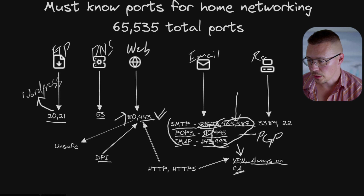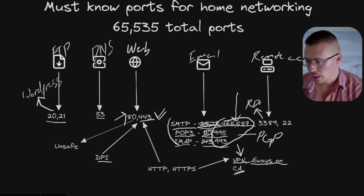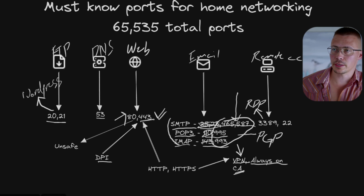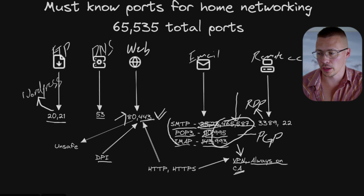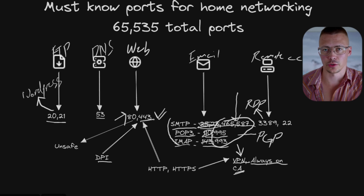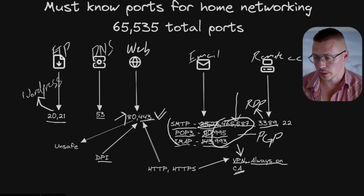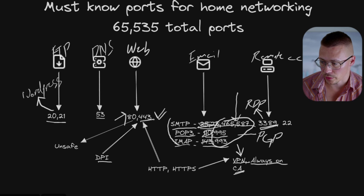Moving over to remote access — port 3389 is what you'll see in Windows, and it's for Remote Desktop Protocol. Unless you have an elaborate home lab or need to access your home Windows computer from another location, you probably won't need RDP. If you're not going to use it, I recommend turning off the Windows RDP feature and blocking port 3389 from internet traffic.